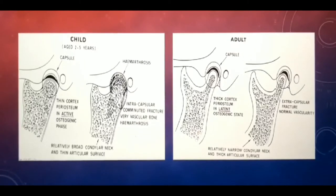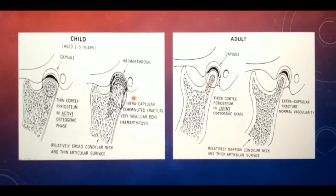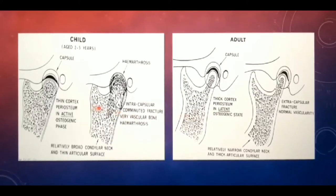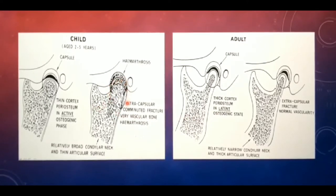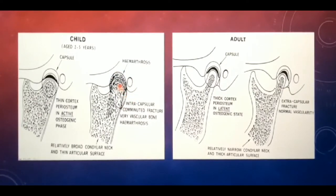These diagrams depict the anatomical and histological differences between the condylar heads of a child and an adult. The cortical bone thickness at the condylar head in a child is very less compared to that in an adult. The periosteum of the condyle facing the joint is in its active osteogenic state in a child, whereas it has moved to the latent osteogenic state in an adult. The condylar neck in a child is broader with a thin articular surface. Therefore, an impact at the condyle will confine the fracture within the capsule — an intracapsular fracture with haemarthrosis, meaning bleeding and swelling within the joint. This carries a higher risk of progressing into TMJ ankylosis.